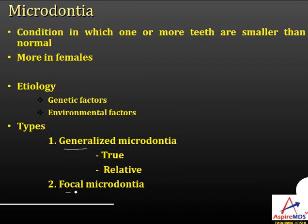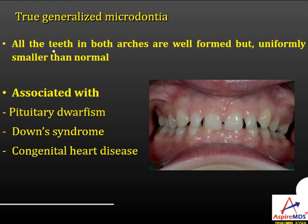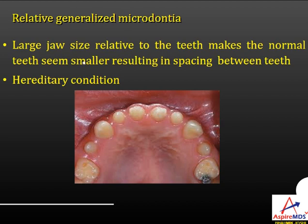Microdontia can be either generalized or focal. In generalized microdontia, all teeth are involved. True generalized microdontia is when teeth in both arches are well-formed but uniformly smaller than normal size — associated with pituitary dwarfism, Down syndrome, and congenital disease. In relatively generalized microdontia, the jaw size is larger relative to the teeth, making normal-sized teeth appear smaller. This occurs due to a hereditary mismatch — for example, a child inheriting a large jaw from the father and small teeth from the mother.